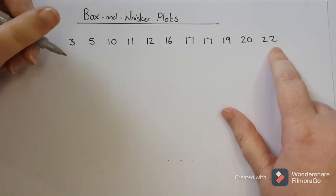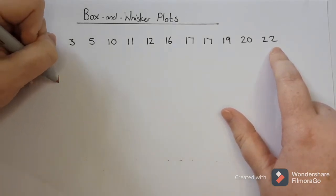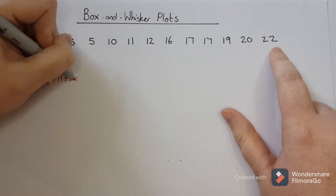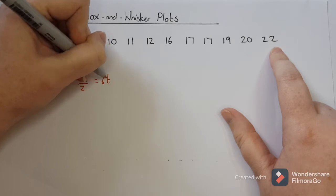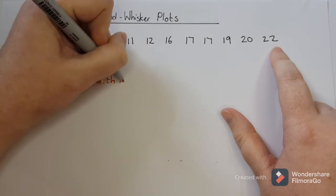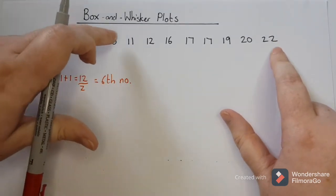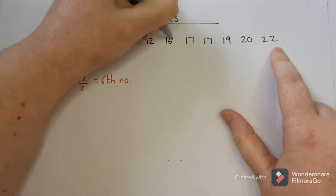And remember, 11 plus 1 is 12, divided by 2 means I'm looking for the sixth number to find the median. So I'm going to count 1, 2, 3, 4, 5, 6.